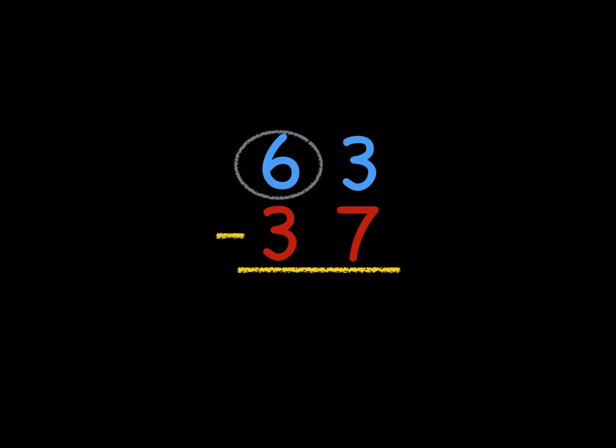We're going to regroup one of our tens by taking away one of them so that we'll have just five left. Then we're moving that ten over to our ones so that instead of three ones, we have thirteen ones.